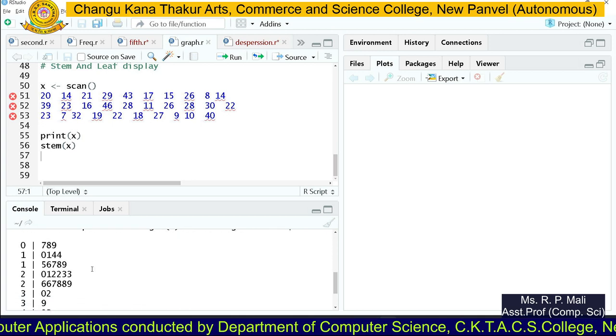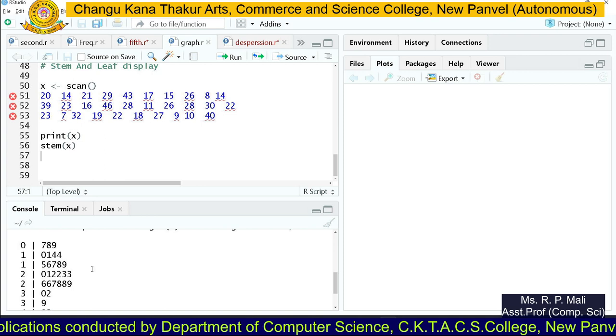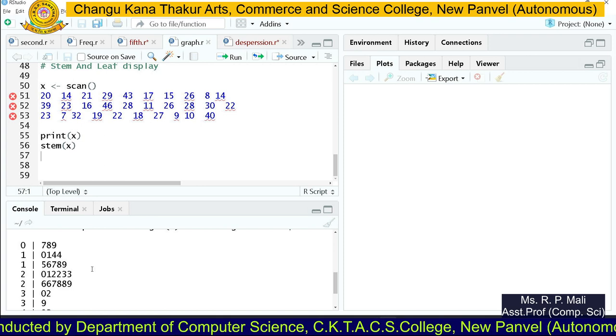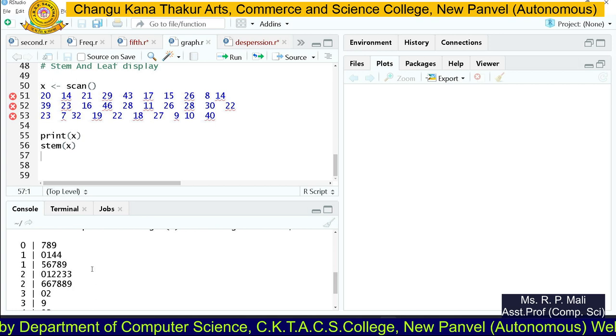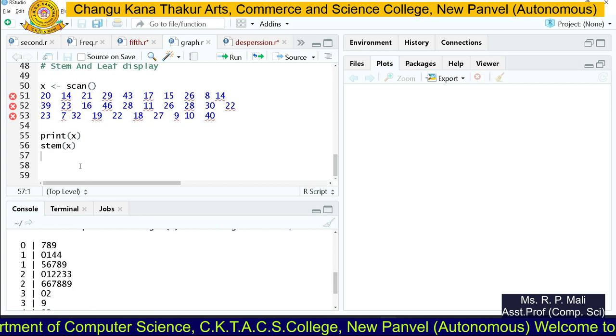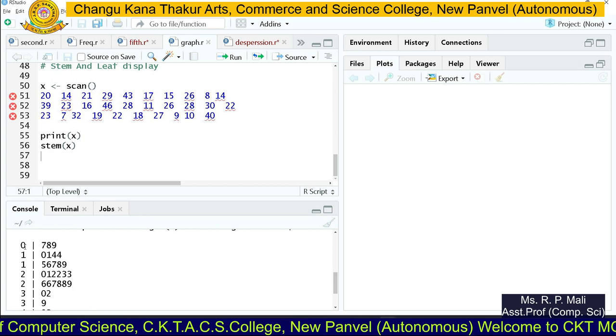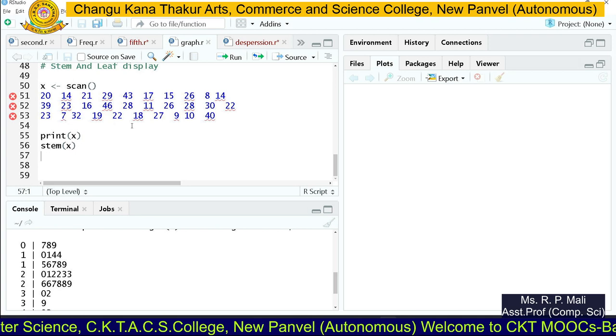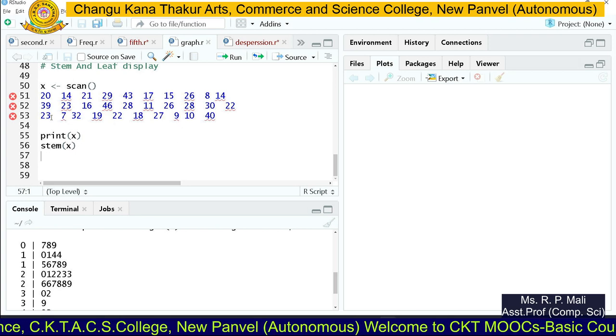The leaf part is also in ascending order. Here you can see 0 is the first stem, so 7, 8, 9 are the leaf parts. This represents 07, 08, and 09.